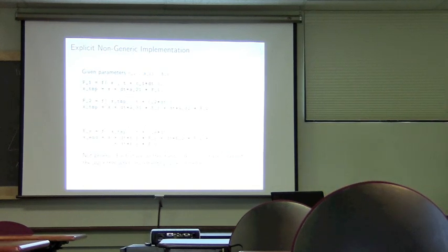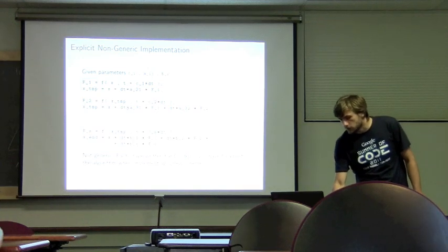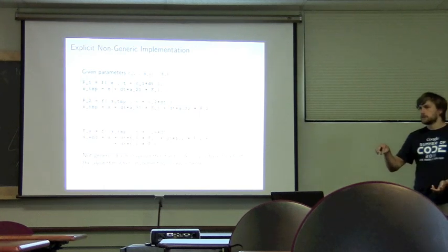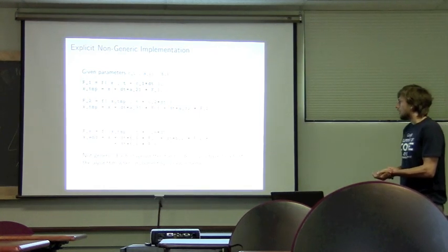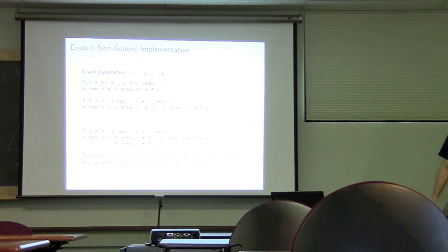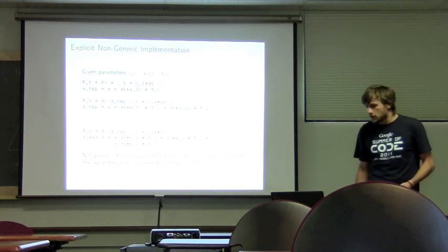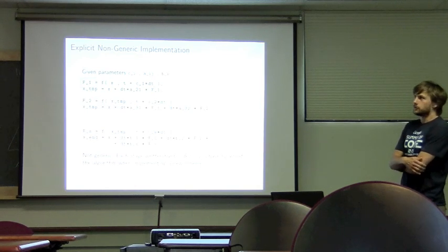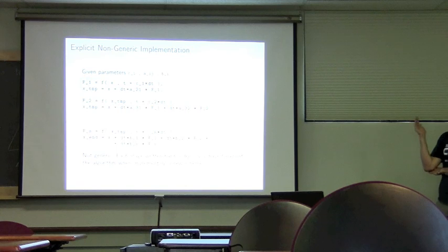A trivial implementation of this algorithm looks like this — it's pretty obvious what's happening: you evaluate your function, calculate intermediate results, evaluate your function using those intermediate results, and so on until you finally get your solution. This is perfectly fine and is what's done in Numerical Recipes or the GSL scientific library. It's the standard way to implement it, and it's fast. The problem is just that if you write a library and want, say, six different schemes, you end up repeating the same code — and we know we can do better.